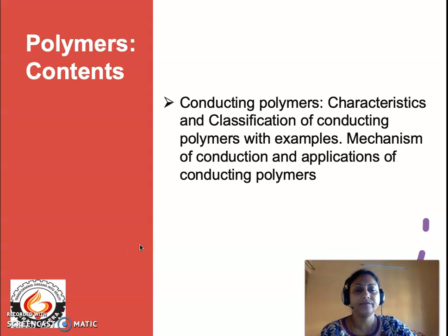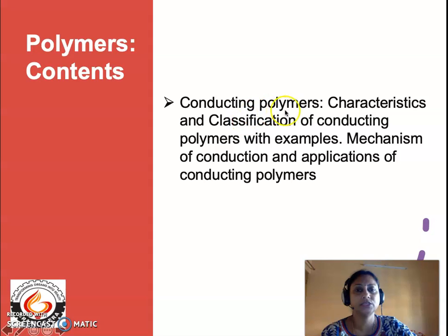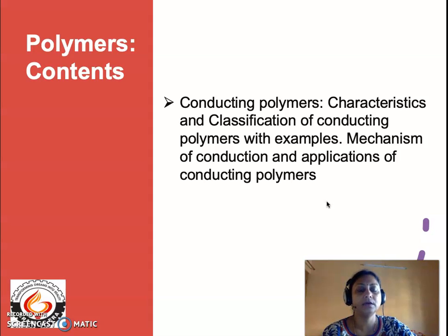Let me revise what I have taught you about conducting polymers. The polymers which are able to conduct electricity are called conducting polymers. The majority of polymers are actually insulators. What makes the conducting nature of polymers has been explained by the band theory, which explains the concept of valence band and conduction band. Molecular orbitals having a lower energy level are called the valence band, and those with higher energy level are called the conduction band.